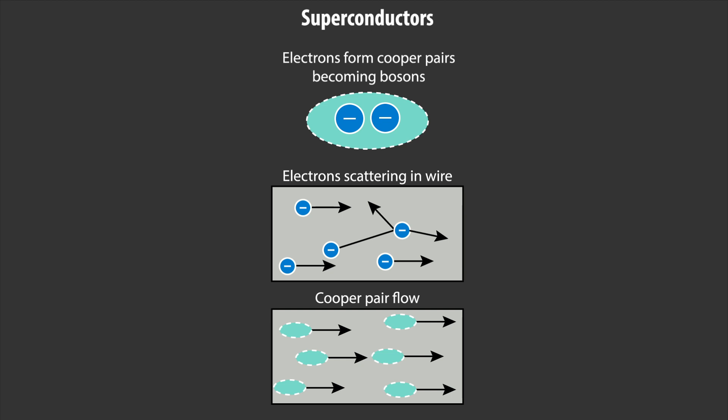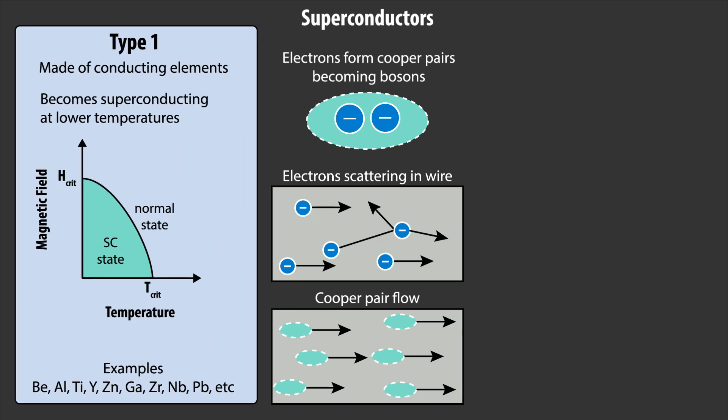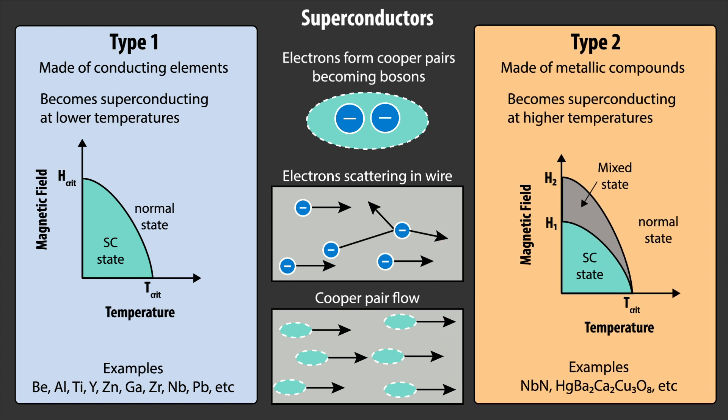Superconductors come in two distinct types. The first is made up of single elements that are conductive at room temperature, like aluminum, and are referred to as type 1 superconductors. Type 2 superconductors are instead made up of alloys, like yttrium, barium, copper oxide, and typically have a critical temperature that is much higher than type 1 superconductors.